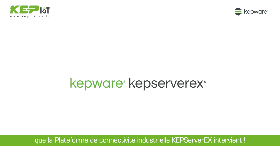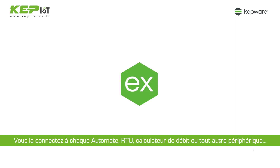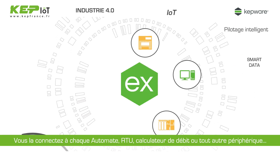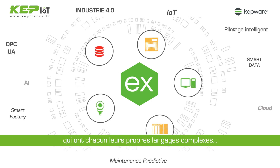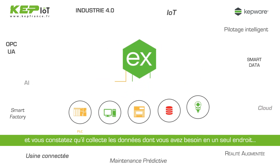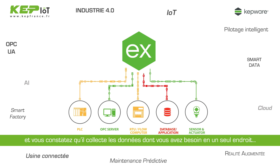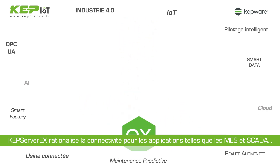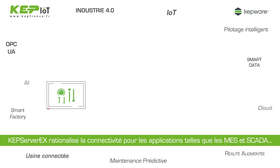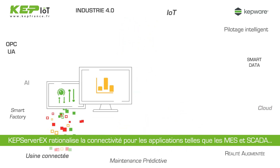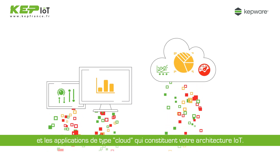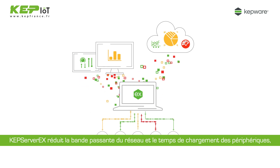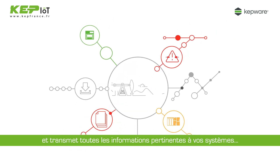Enter KepServerEX. It's a connectivity platform. You connect it to every PLC, RTU, flow computer, and automation gizmo that speaks all those different complex languages, and watch as it collects the information you need into just one place and starts translating. KepServerEX streamlines connectivity for on-site apps like MES and SCADA and cloud-based apps that enable your Internet of Things. It reduces network bandwidth and device loads big time and pushes all pertinent information to your systems.